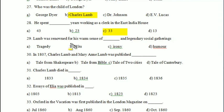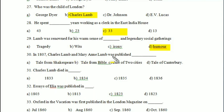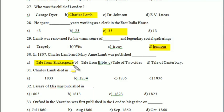Lamb was renowned for his warm sense of — tragedy, wits, irony, or humor? Your answer is 'humor.' In 1807, Charles Lamb and Mary Lamb published — Tales from Shakespeare, Tales from the Bible, A Tale of Two Cities, or Tales of Canterbury? Answer is 'Tales from Shakespeare.'